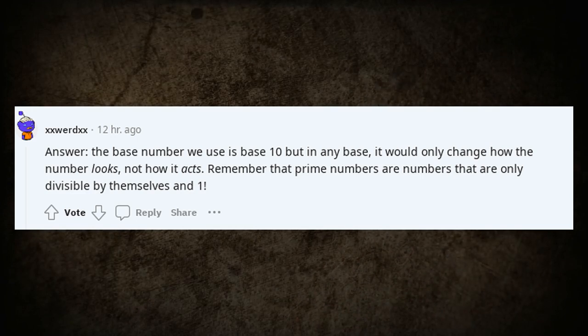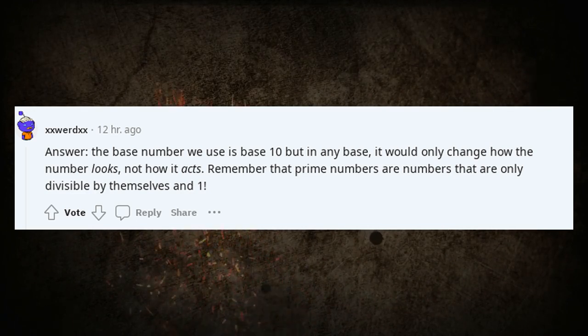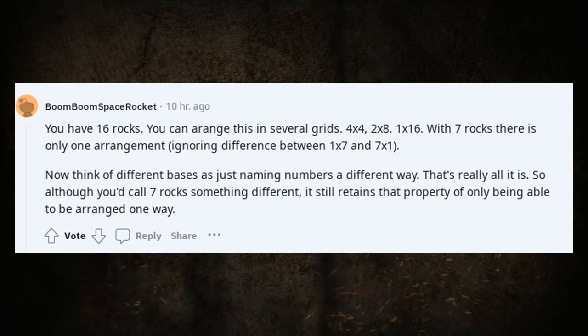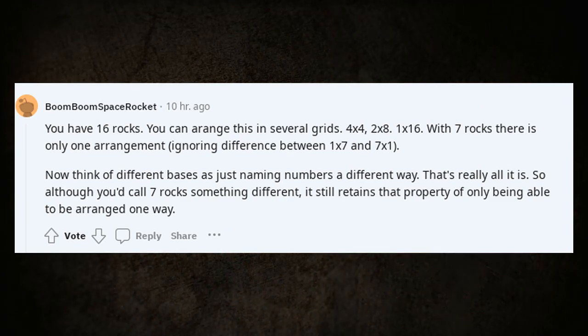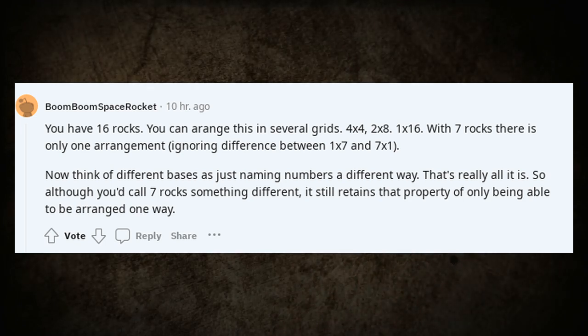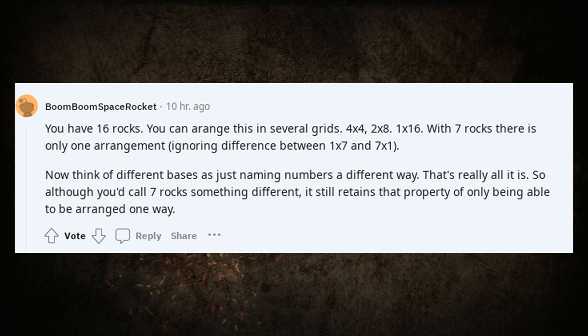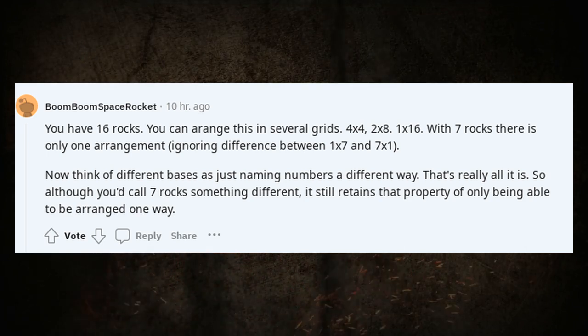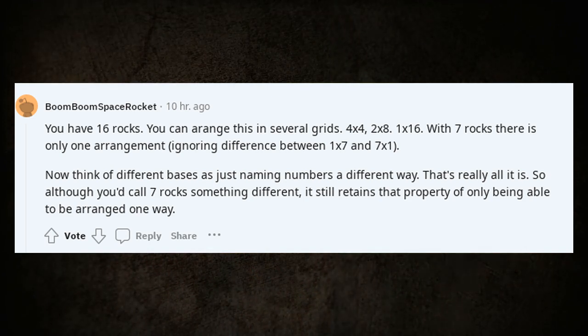Remember that prime numbers are numbers that are only divisible by themselves and one. You have 16 rocks. You can arrange this in several grids: 4 by 4, 2 by 8, 1 by 16. With 7 rocks there is only one arrangement, ignoring difference between 1 by 7 and 7 by 1. Now think of different bases as just naming numbers a different way. That's really all it is. So although you'd call 7 rocks something different, it still retains that property of only being able to be arranged one way.